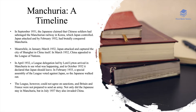For a more detailed timeline of the Manchurian Crisis: it began in September 1931 when Japan claimed that Chinese soldiers had sabotaged the Manchurian railway in Korea, which Japan controlled. Japan attacked and by February 1932 had brutally conquered Manchuria. Between January and March 1932 Japan also attacked and captured Shanghai. In March 1932 China appealed to the League. In April 1932 a League delegation led by Lord Lytton arrived in Manchuria, and in October 1932 declared that Japan should leave. In February 1933 a special assembly voted against Japan, and Japan walked out of the League. The League could not agree on sanctions, Britain and France were not prepared to send an army, and in July 1937 Japan also invaded China.